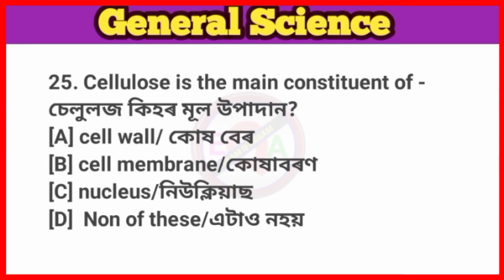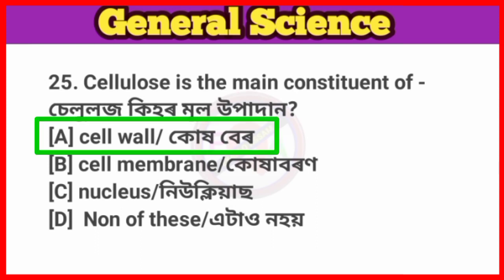Question No. 25. Cellulose is the main constituent of? Answer: Option A, Cell wall. Cellulose is the main constituent of the cell wall.